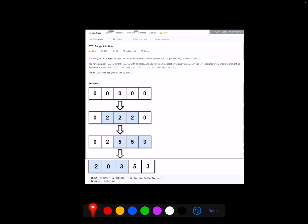Then this is our resulting array: minus 2, 0, 3, 5, 3. It's very easy to think about the brute force problem, right? So basically, we go through all the updates and update the array.